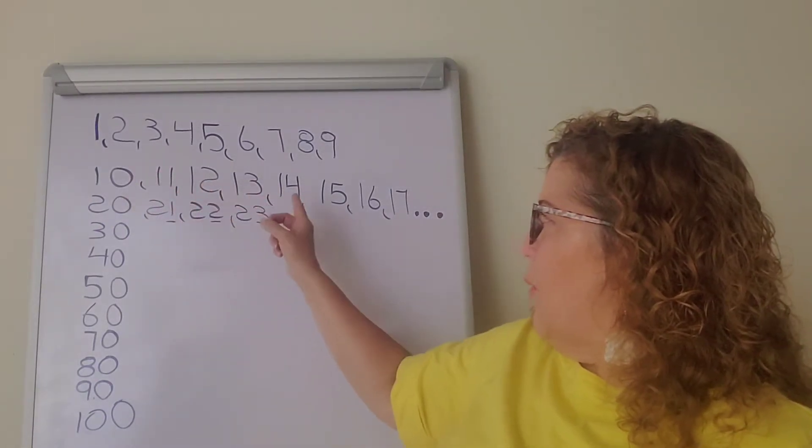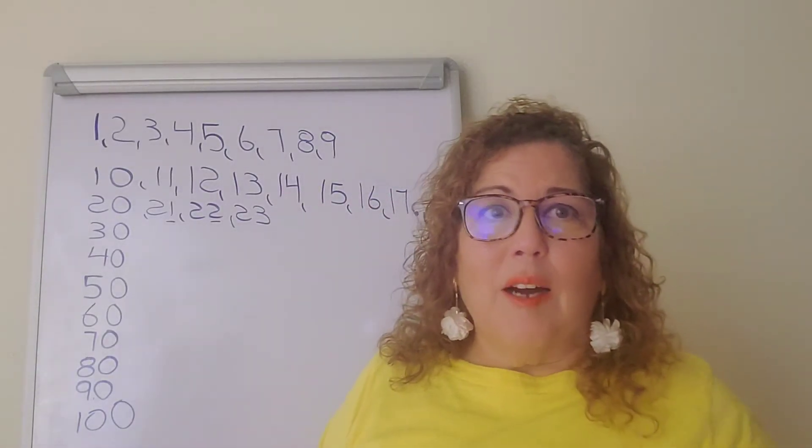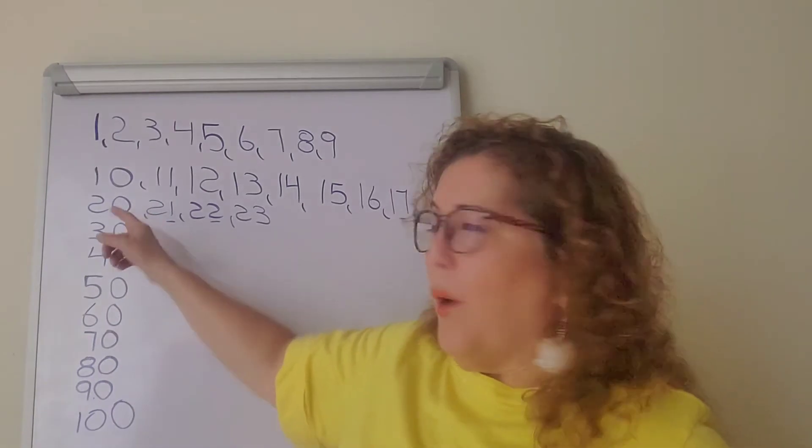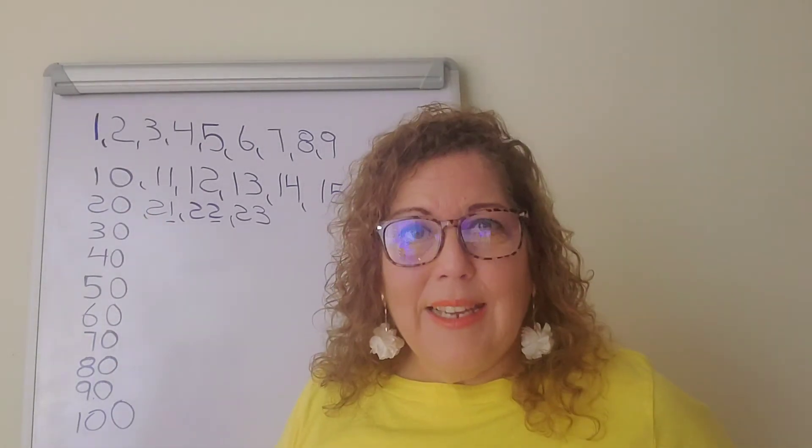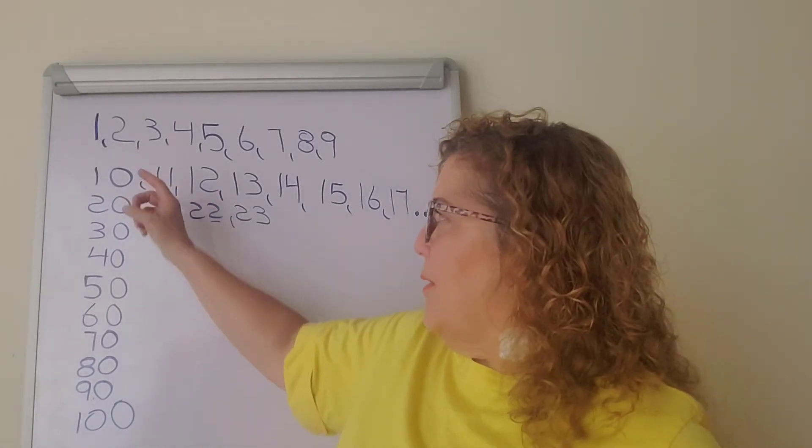It's 1 and 0, 1 and 1, 1 and 2, 1 and 3, 1 and 4, 1 and 5, 1 and 6, 1 and 7, up to 1 and 9, and then we get to 20. So we know that we can go from 10 to 20.